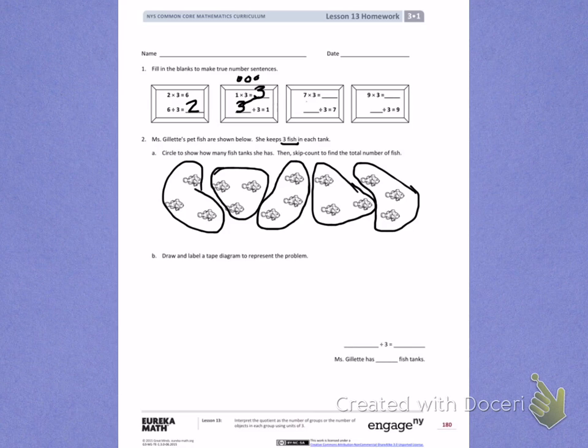Next, I need to skip count to find out how many fish she has. Here are 3. Then we have 3 more. 6. 3 more. 9. 3 more. 12. And the last 3. 15. She has 15 fish.